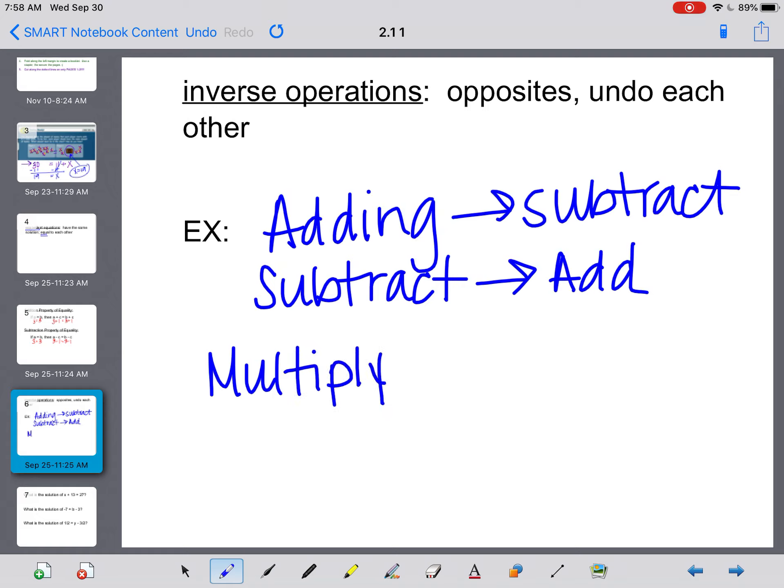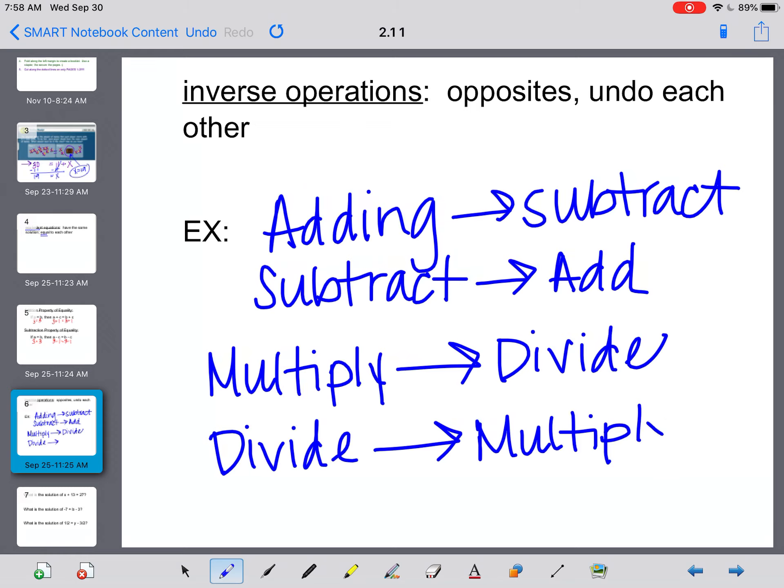Third, if something is multiplying, and I want to undo it or take it apart, I would have to do the opposite, which is to divide. And vice versa, if something is dividing, I would have to do the opposite, which is to multiply.